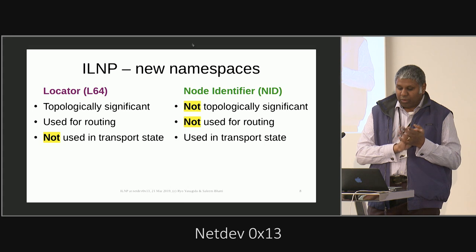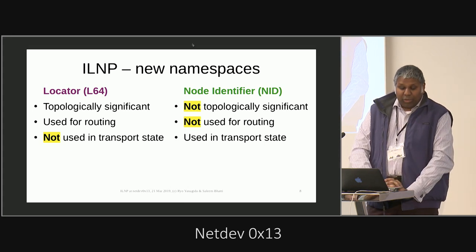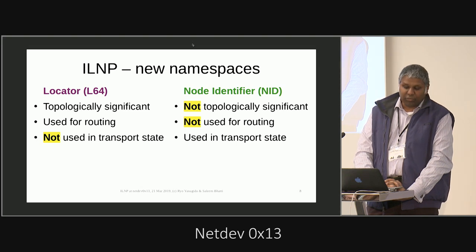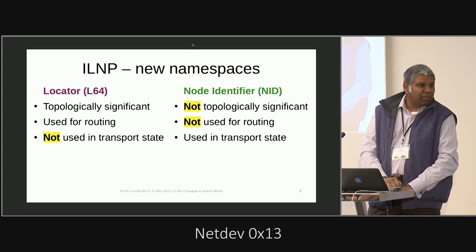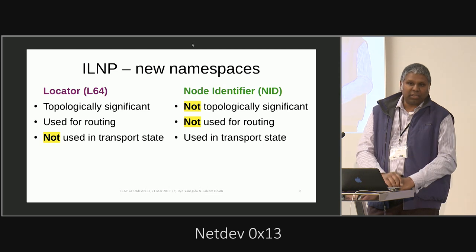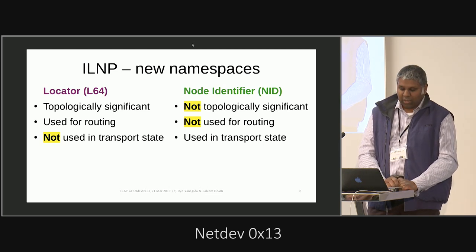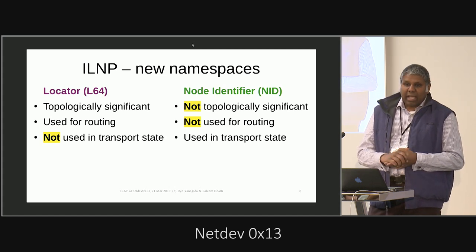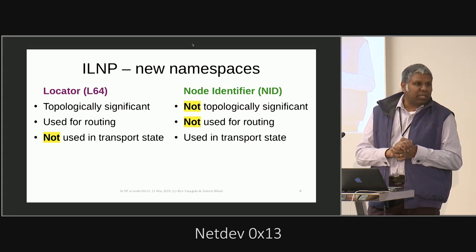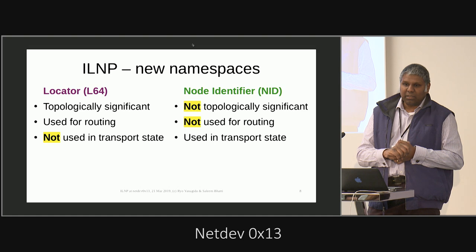Just a little bit more on these two new namespaces. The locator is topologically significant — it is used in routing, but it's not used at the transport layer state. So the bits you use at the transport layer are no longer linked to topology or bound to an interface. The node identifier has no topological significance at all and doesn't play any part in routing. That's the only set of bits used in the end-to-end transport protocol state. And there are dynamic bindings between node identifiers and locators.